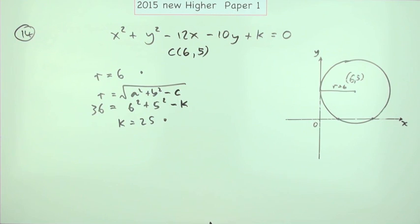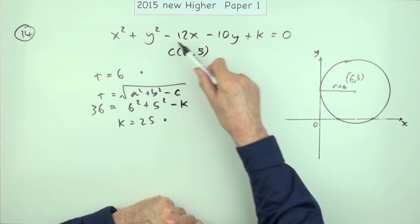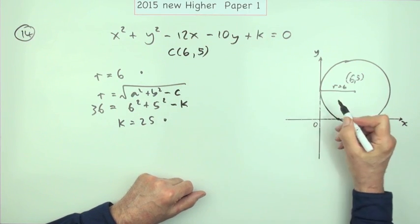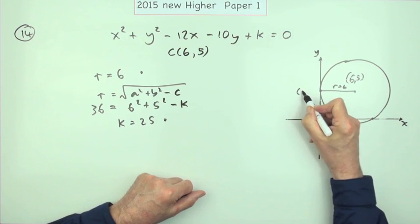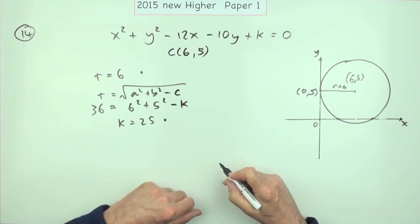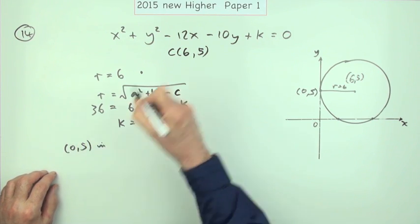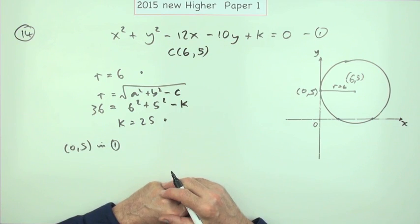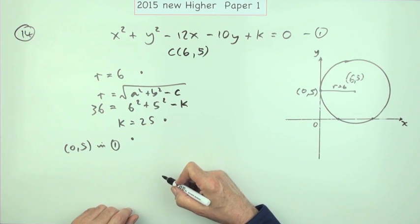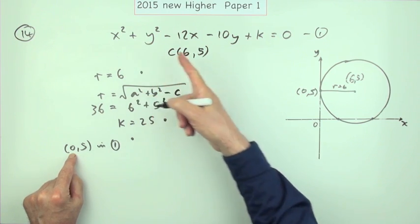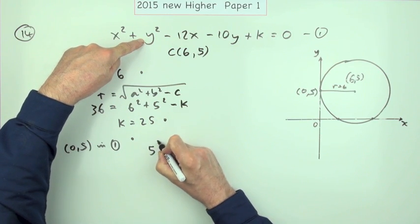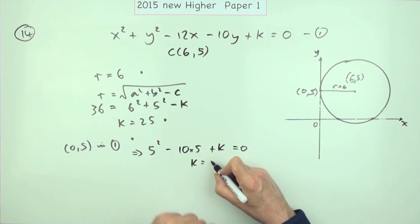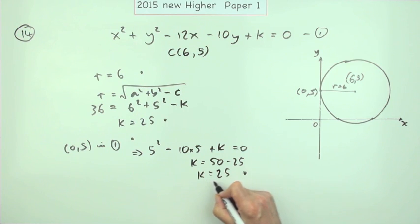An alternative method: this equation has three unknowns, so to find k you need values for the other two. When the circle just touches the y-axis, it touches at the point (0, 5) — none along, five up. Substituting (0, 5) into the equation gives 5² − 10×5 + k = 0, so k = 50 − 25, giving k = 25 — the same answer.